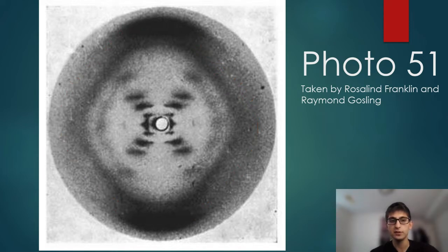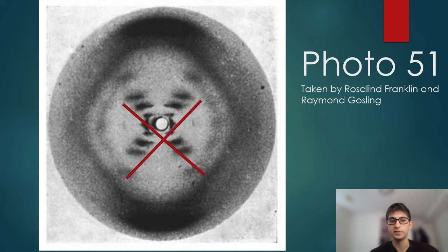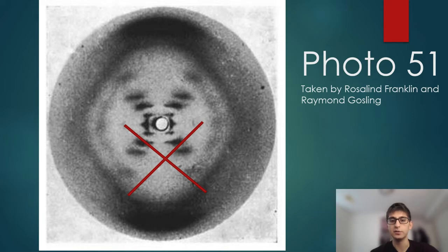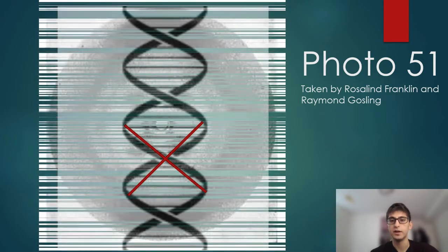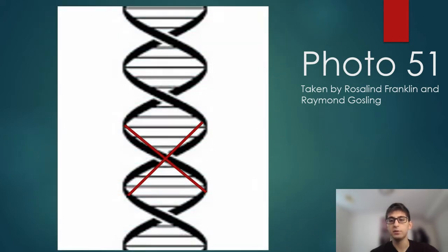The most glaring part of this image would be the appearance of an X-shape in the center of the diamond. This X-shape indicates that DNA holds a double helical shape. Linus Pauling, who previously predicted DNA to be a triple helix, was proved wrong by Watson and Crick, who succeeded largely thanks to the data held in this image.